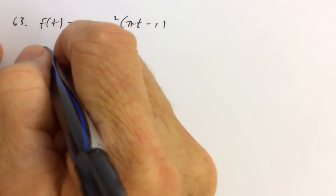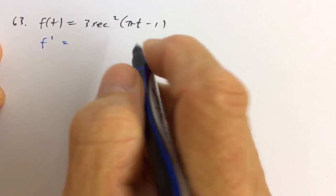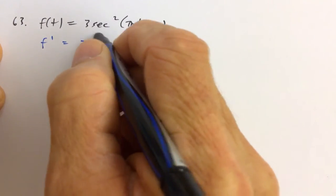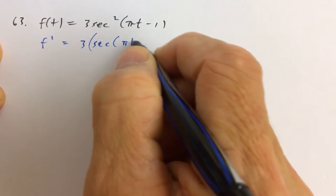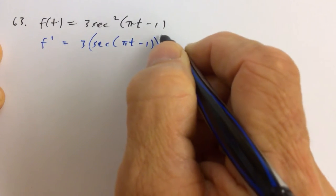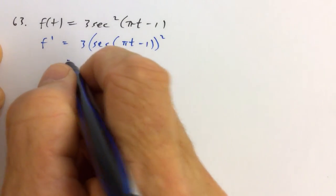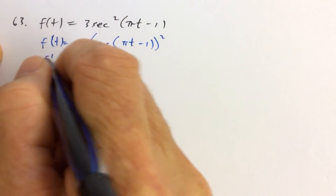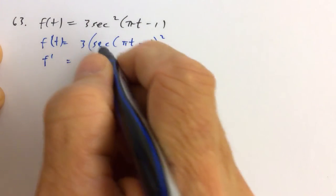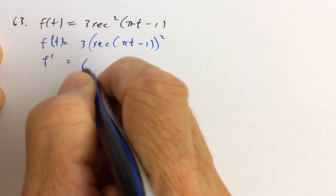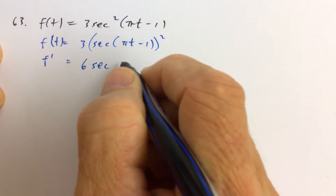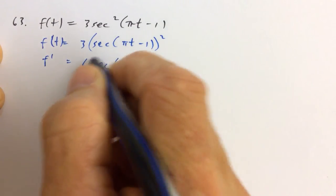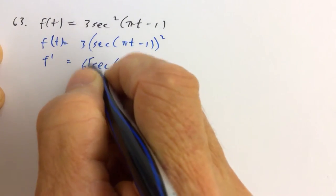So now for the real 63, f prime is equal to — let's rewrite this as 3 times the secant of something to the second power. So that's f of t actually. f prime then would be equal to — using the power rule — 2 times 3 is 6, times the secant of (πt − 1) raised to the first power.